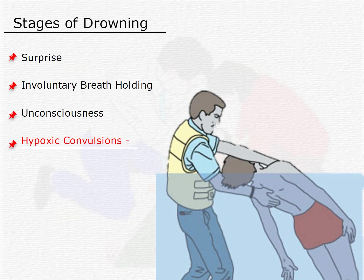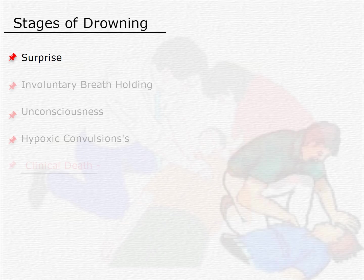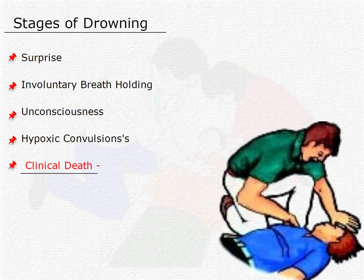The fourth is the hypoxic convulsions stage. Due to the lack of oxygen in the brain, the victim may look as if he or she is having a convulsion, which is why this stage is called the hypoxic convulsion stage. The victim's skin turns blue, especially in the lips and fingernail beds, and the body may appear rigid. There may be violent jerking of the body and frothing at the mouth.